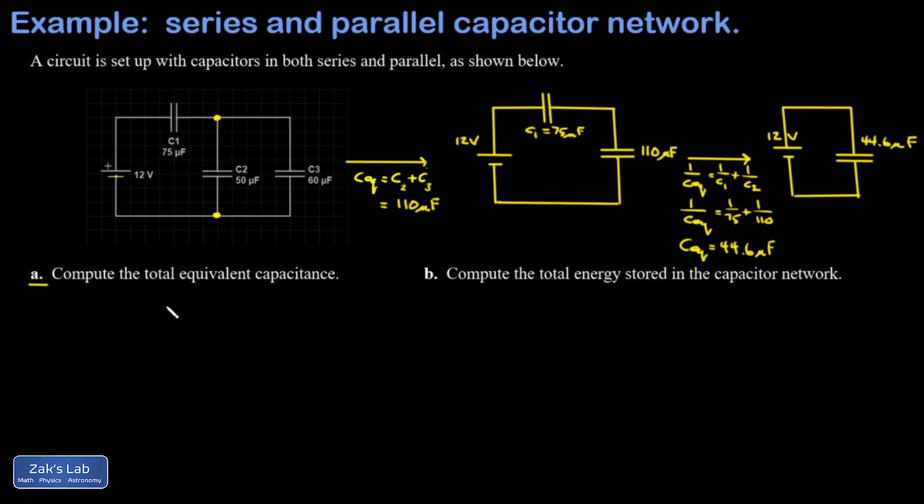Question b asks me to compute the total energy stored in the capacitor network. We showed in a previous example that if I look at the energy stored in the equivalent capacitor, it turns out to be the same thing as the sum of the energies stored in the individual capacitors. So I don't have to go back and solve for all the details of all these individual capacitors - I can just find the total energy stored in that one equivalent capacitor and it's going to give me the correct answer.